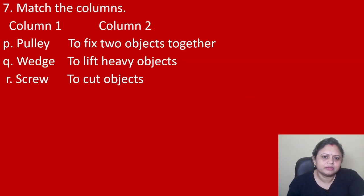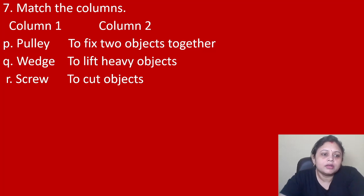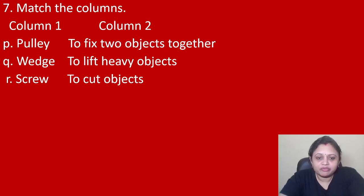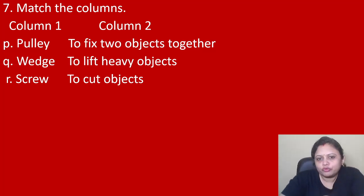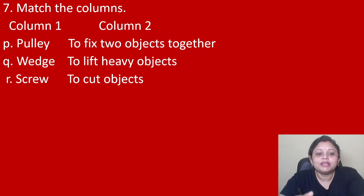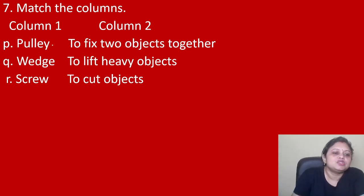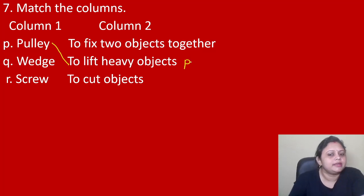The next question: match the columns. Column 1 — pulley, wedge, screw. Column 2 — to fix two objects together, to lift heavy objects, to cut objects. So pulley — what do we do with a pulley? We usually use the pulley to lift heavy objects. So pulley matches with 'to lift heavy objects' — I can write P here.